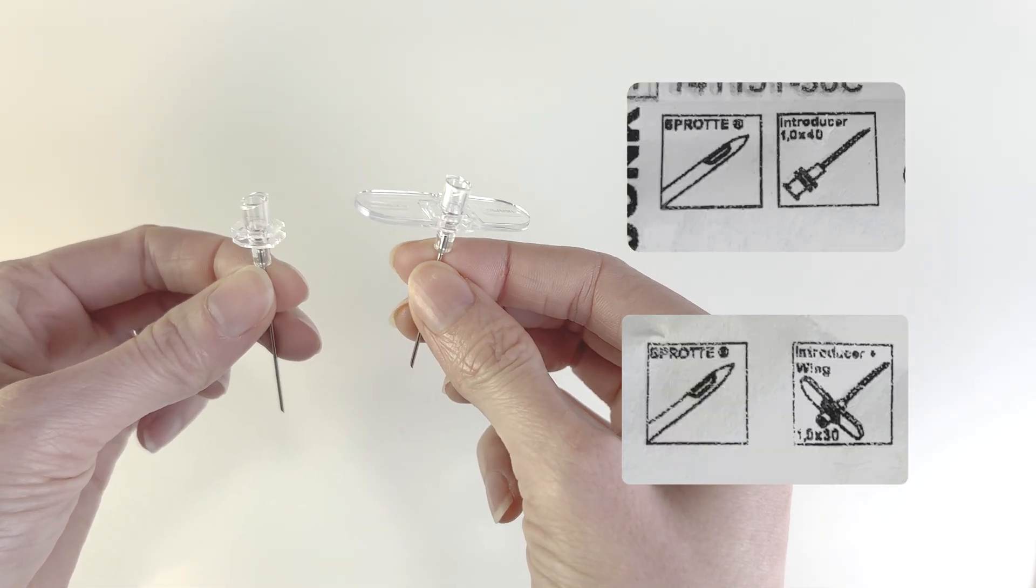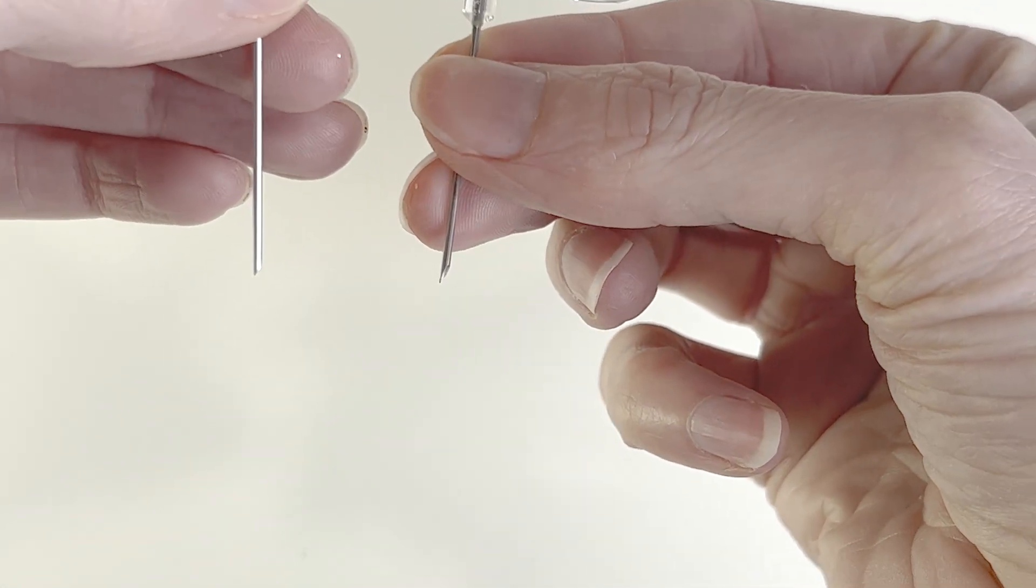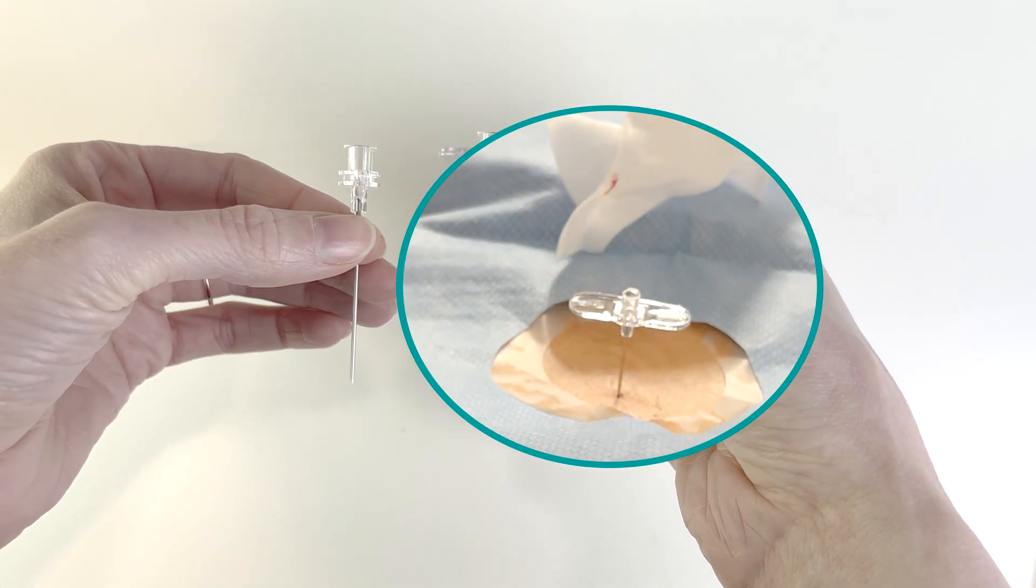As you can see from the packaging, one is basic and the other has wings. They have very sharp, traumatic, tapered tips so that you can get through the skin and muscle. These are short and not designed to go in the CSF space.